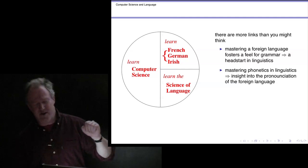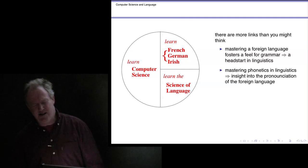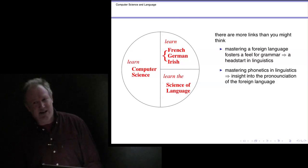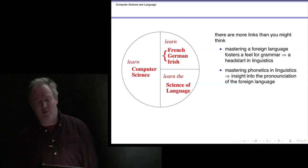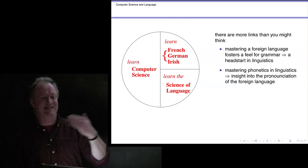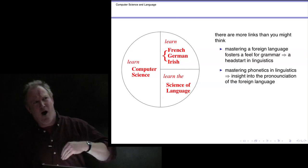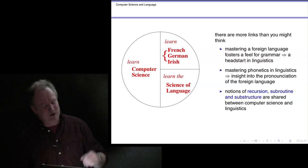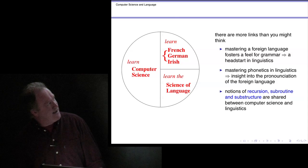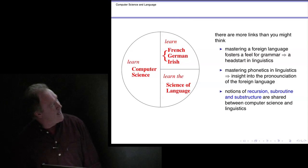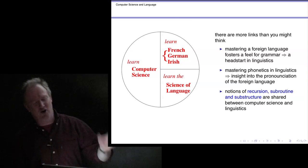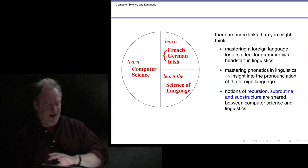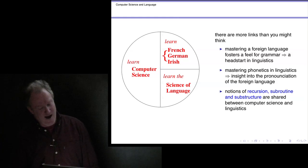Another example: one of the things you'll be doing is studying aspects of the sounds of language — studying phonetics — which is quite useful for people trying to master a foreign language, particularly mastering the sounds of that language. You'll have greater insight into what you have to do to make the particular sounds you're striving to make. There's also a more abstract relation: structures and subroutines are notions that occur over and over again in computer science and programming, and also in linguistics. There are many other ways these things interweave with each other.